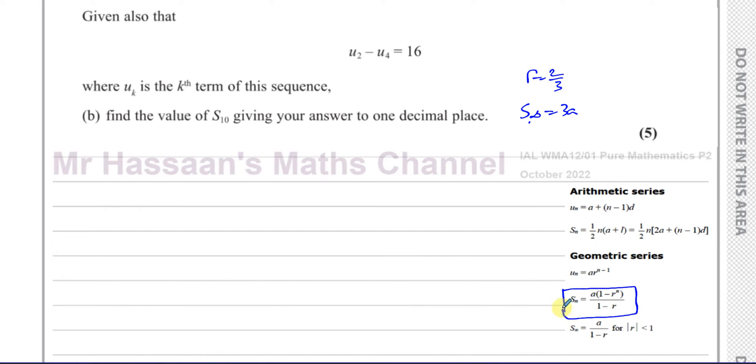So we need to use the sum formula. We need to know what R is, which we know. But what we need to do is we need to find what A is. I know N is 10. I know R is two-thirds. What we need to do is we need to find what A is. For us to use this formula, we need to find the first term of the sequence. So we're going to use this little information here to find it.